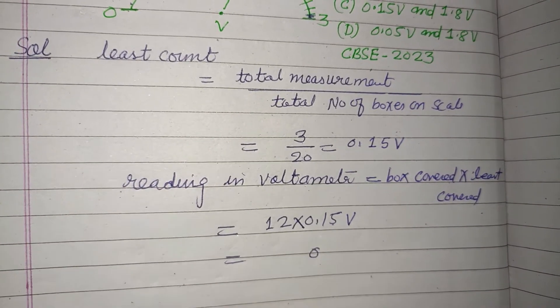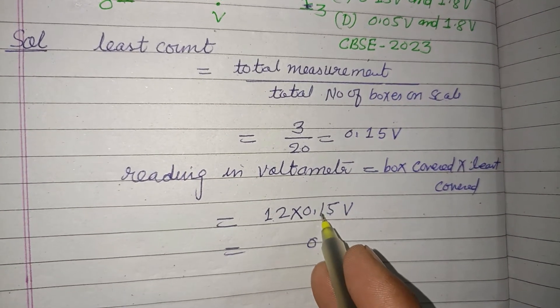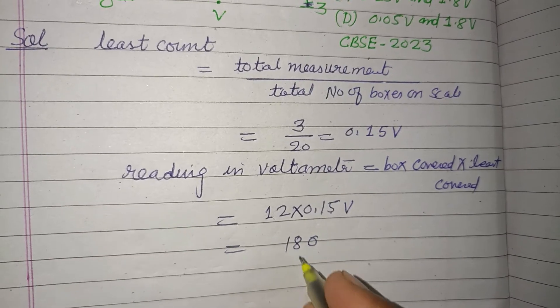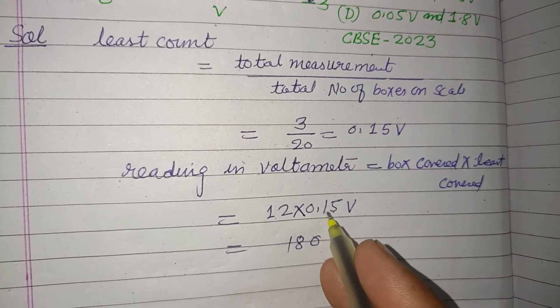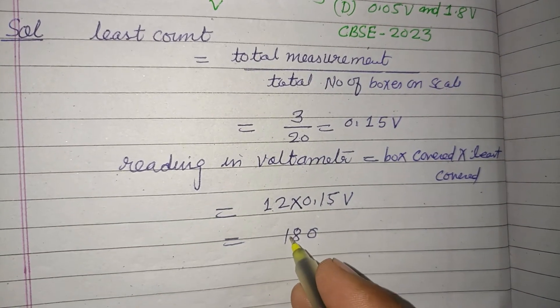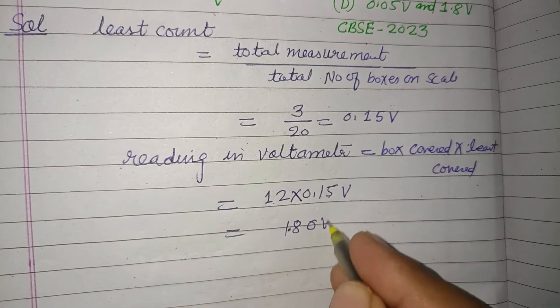So 12 times... 12 into 15, 12 times 12 is... 6, 18. And decimal point after two, so this is 1.8 volt.